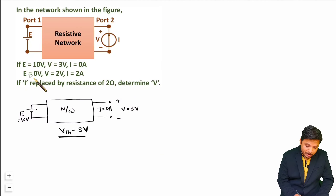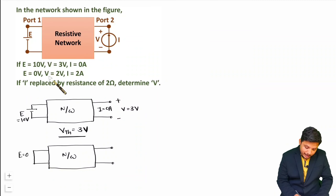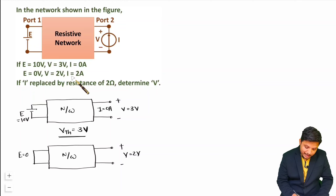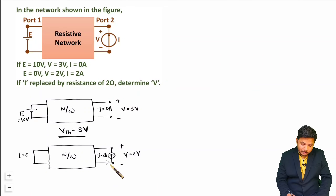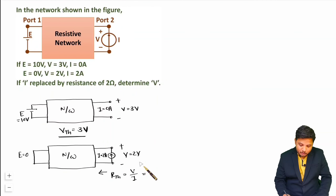Applying the second combination: E = 0 means the input port is short circuited. With V = 2 V and I = 2 A, we have a current source of 2 A applied at the output port while the input is shorted. This gives us Rth = V / I = 2 / 2 = 1 ohm. So now we have Vth = 3 V and Rth = 1 ohm for this circuit.